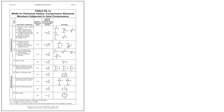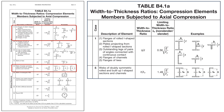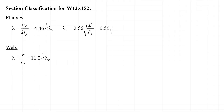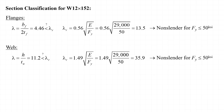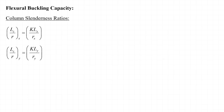The limiting values of λ_r are found in Table B4.1a of the AISC specification. Case 1 applies to the flanges and Case 5 applies to the webs of rolled I-shaped sections. λ_r = 0.56√(E/F_y) for the flanges and λ_r = 1.49√(E/F_y) for the web. Calculating these values, λ_r = 13.5 for the flanges and λ_r = 35.9 for the web. Since 4.46 < 13.5 and 11.2 < 35.9, the flanges and web are non-slender for steel with a yield stress of 50 ksi.